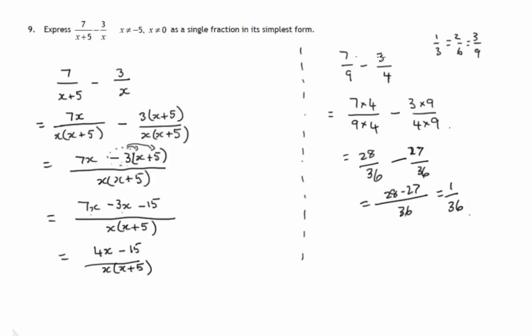Incidentally, this example here, if we let x equals 4, in this example, 7 over 4 plus 5 gives us 7 9ths. 3 over 4 gives us 3 quarters.